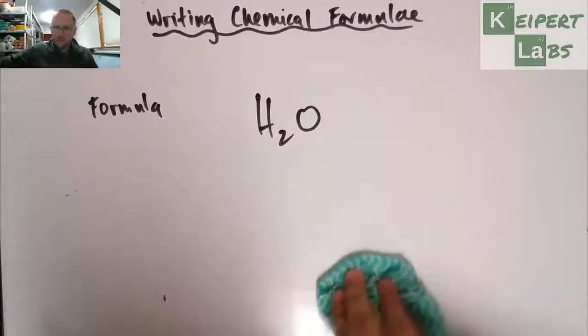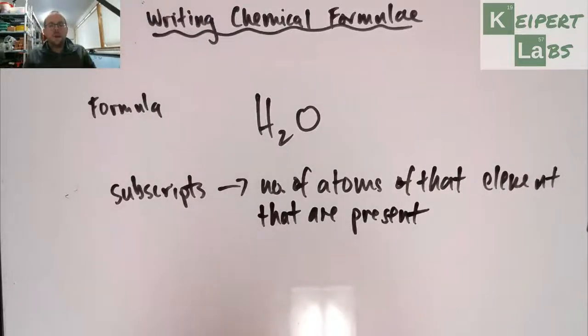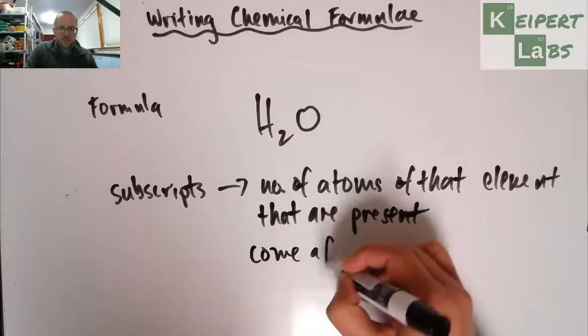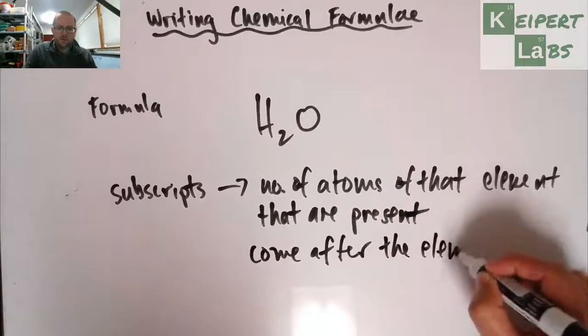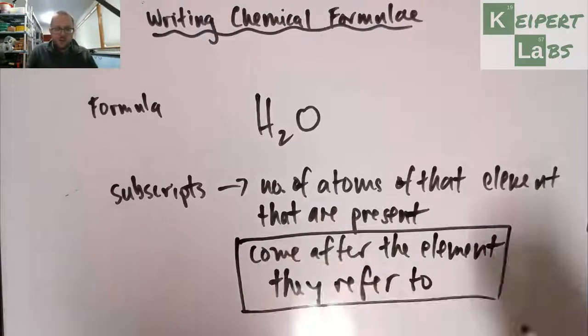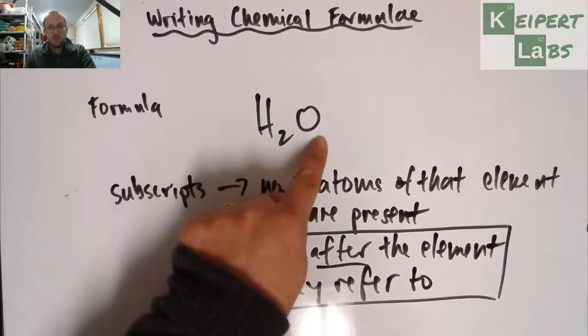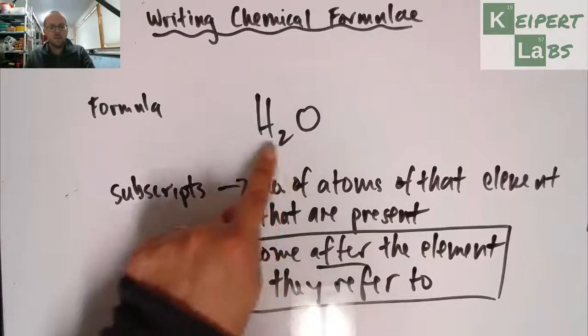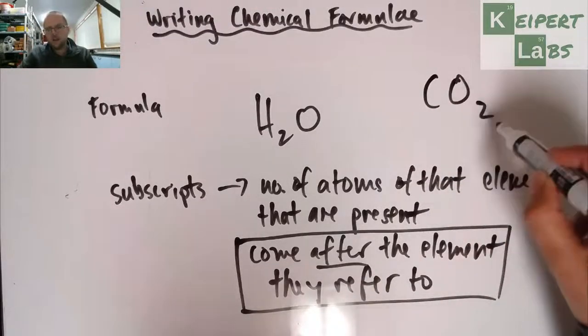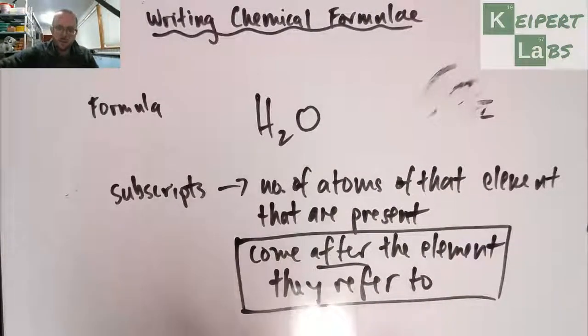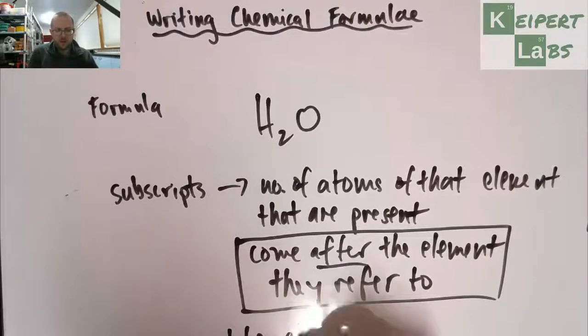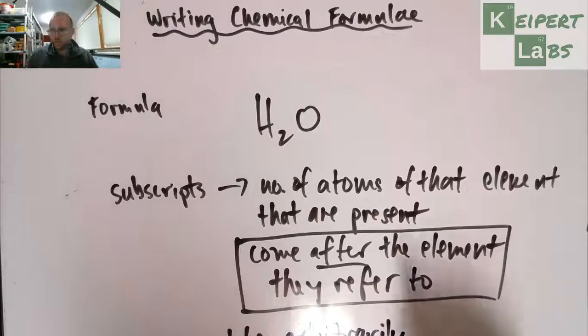Okay. And so this number, this subscript tells us how much of that element is present in that formula. Okay. So the idea, so subscripts, the subscripts tell us the number of atoms of that given element that are present in the compound or in that substance. And they come after the element they refer to. Okay. So that's an important one to be able to distinguish. So the two here refers to the hydrogen and not the oxygen. Okay. Which is why I picked this example because it's sandwiched between elements.